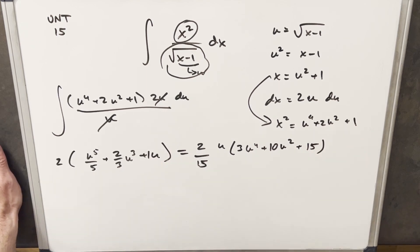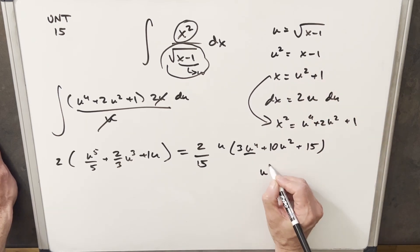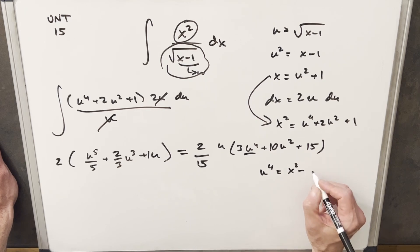Just noticing that the 15s cancel here to give us just the 1 coefficient on the u. Then one other thing before I back substitute. We already have our u squared value, so that's fine. But what's u to the 4th going to be? Well, I can just take u squared and square that. So therefore, u to the 4th is going to be this squared. So that's going to give us x squared minus 2x plus 1.